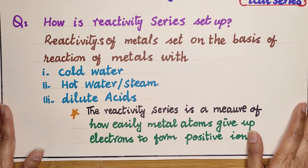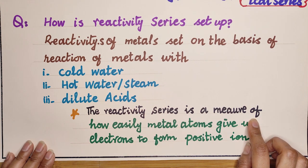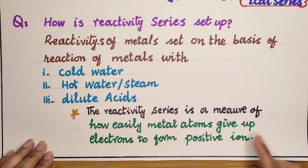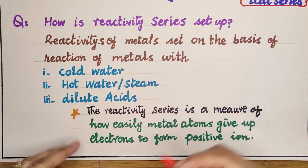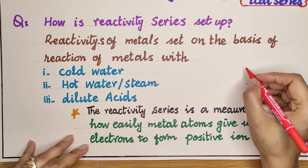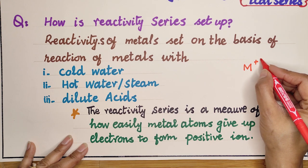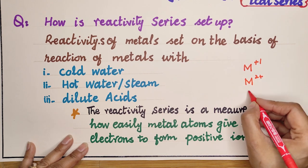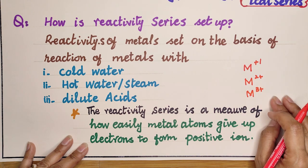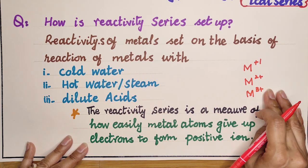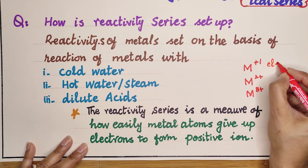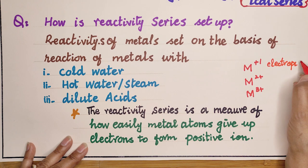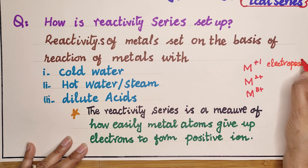The reactivity series is a measure of how easily metal atoms give up electrons to form positive ions. All metals try to form positive ions — a metal M can have a charge of +1, +2, or +3 depending on the group it belongs to. Metals readily lose electrons to form positive charges, so they are called electropositive in nature.